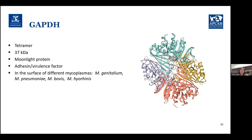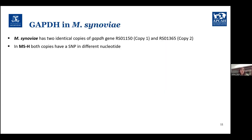These additional functions include acting as an adhesin or virulence factor. Some researchers have shown the presence of GAPDH on the surface of different mycoplasmas, such as genitalium, pneumoniae, bovis, and hyorhinis. In Mycoplasma synoviae, there are two identical copies of the GAPDH gene, located at loci RS01150 and RS01365 — which I'm simply calling copy 1 and copy 2.